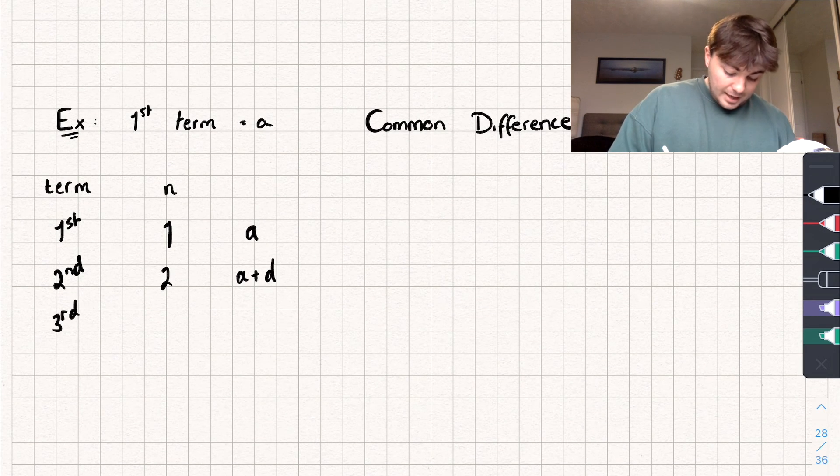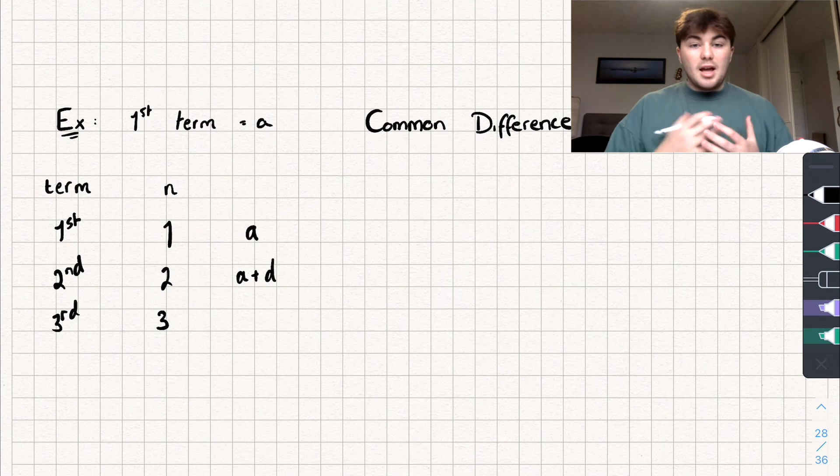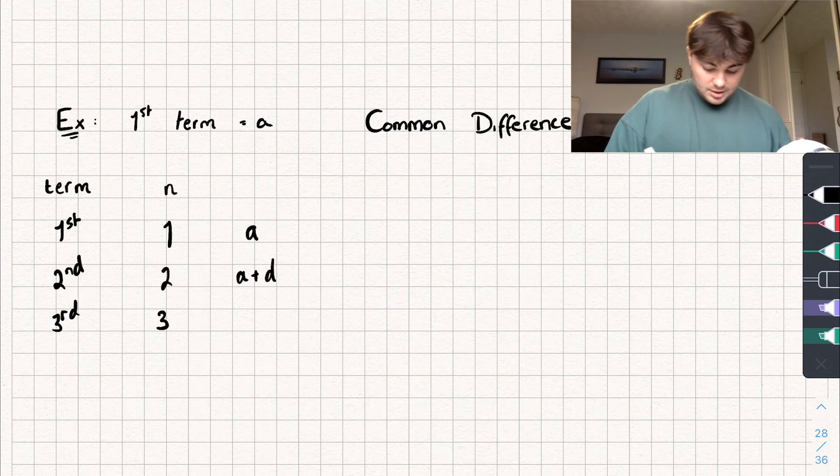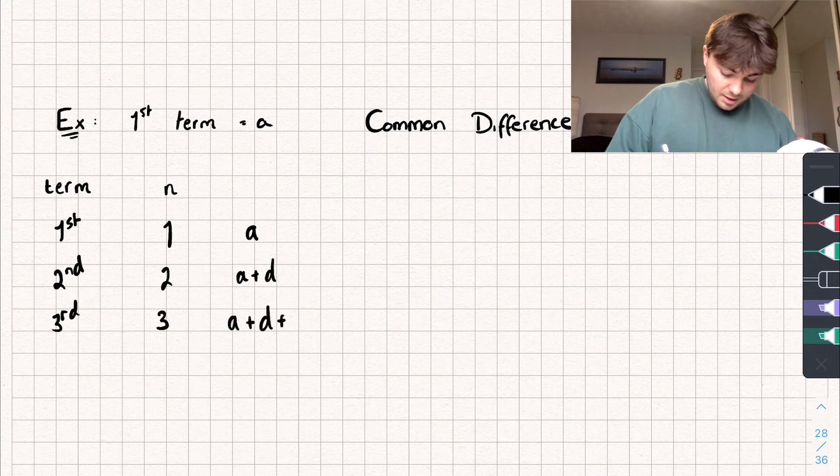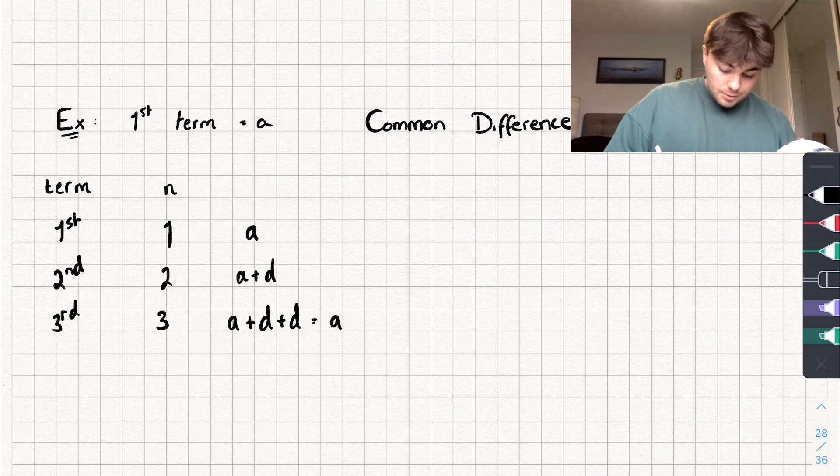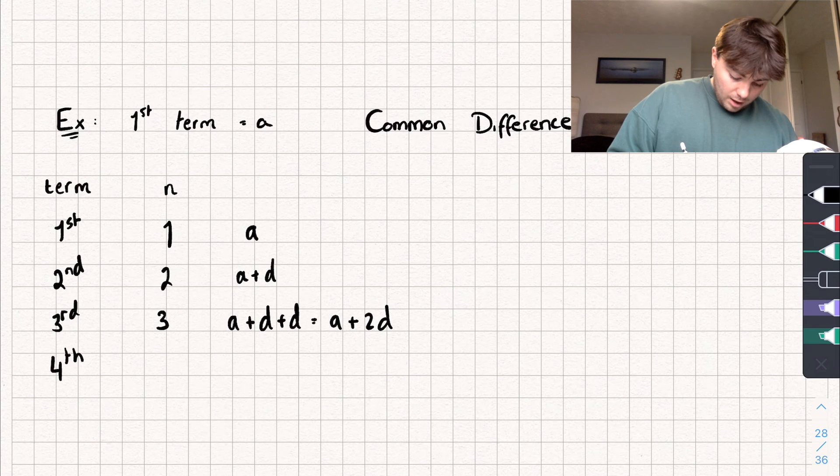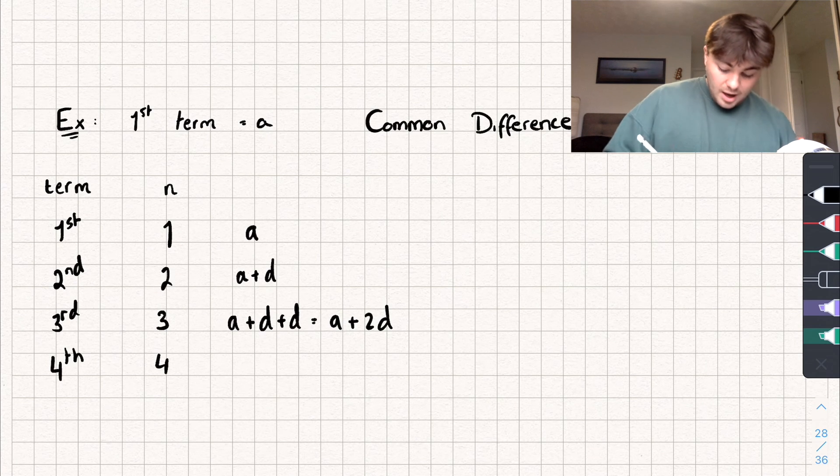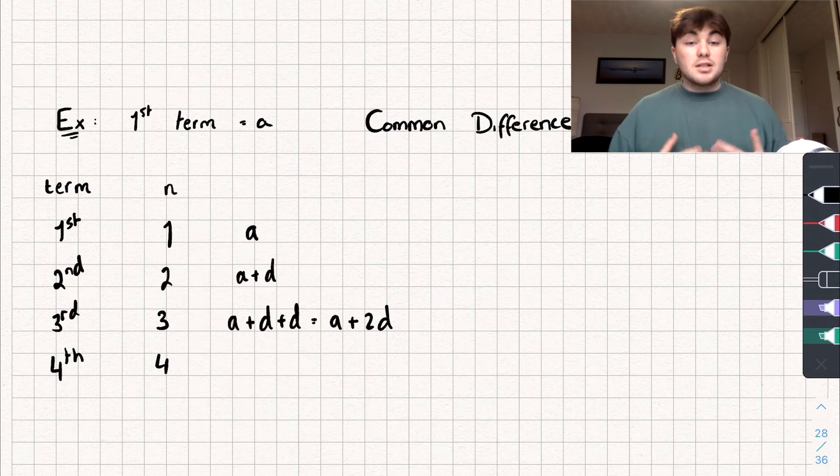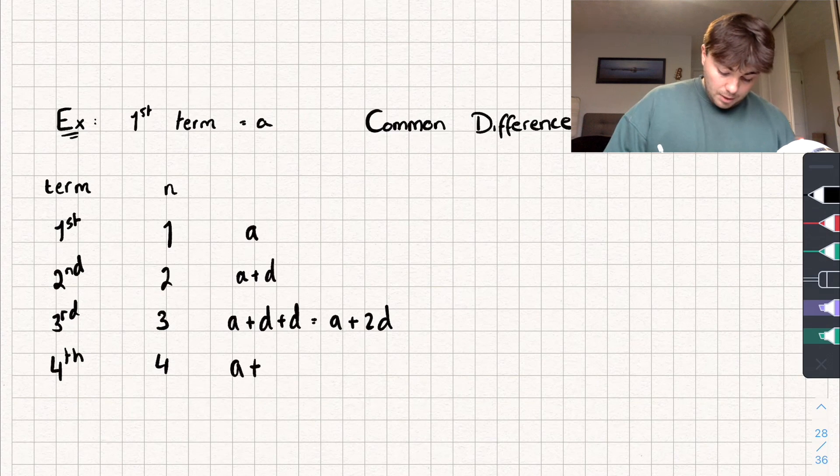For the third term, so that's when n is equal to 3, well it's going to be a plus d plus another d. So we've got a plus d plus d, which is the same as writing a plus 2d. For the fourth term, that's going to be when n is 4, and that's going to be a plus 2d plus another d. So that's going to be a plus 3d.